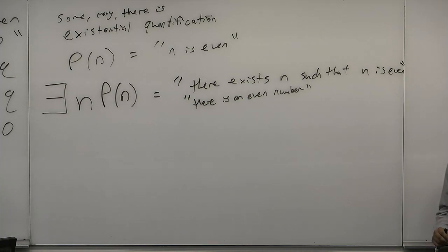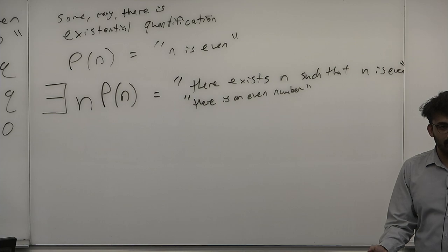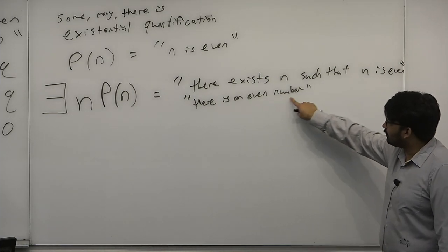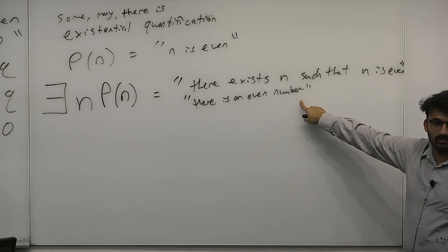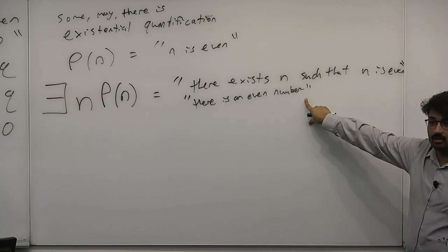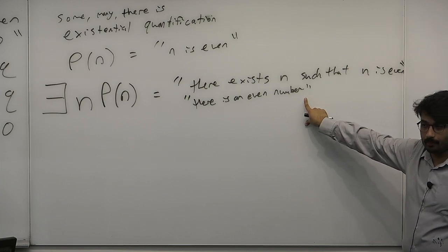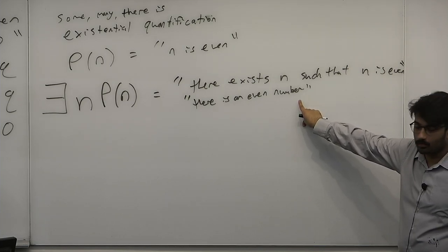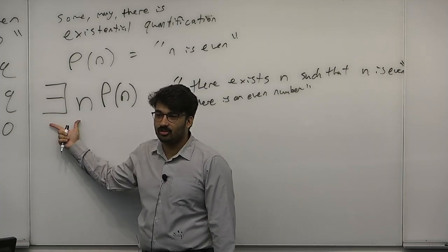This is now a proposition that has been assigned a truth value. 'There is an even number' is either true or false — is it true? Yes. There is an even number. Let's find one: 2. Done. The way to remember this is backwards E is existential — asserting the existence of an object.